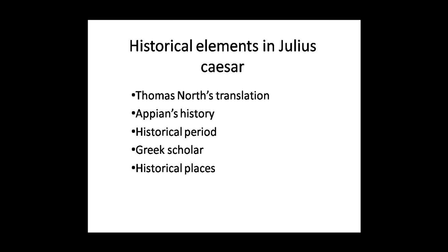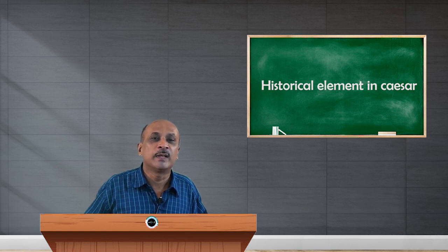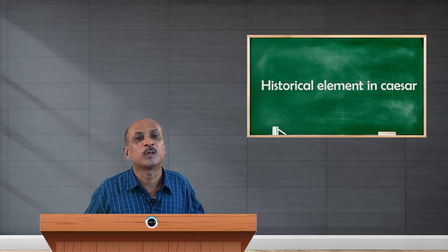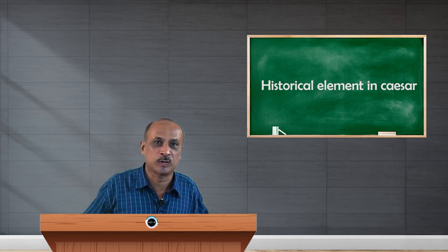Brutus, Cassius, Casca, Cinna, Trebonius, Marcus Antonius, Octavius Caesar, and others had constant relation and conflict with Julius Caesar and his administration. At the same time, they were inseparable characters who influenced the life of Julius Caesar as well.